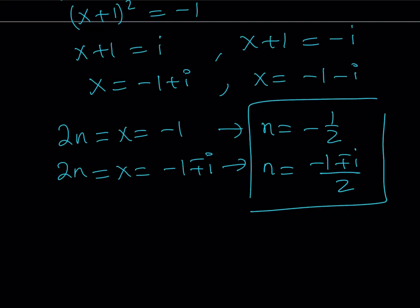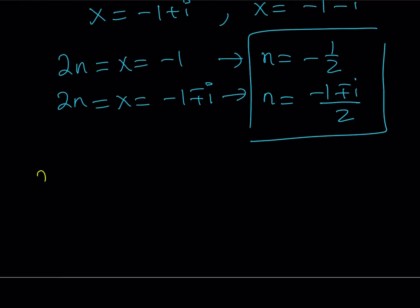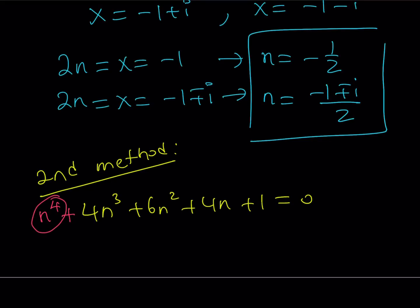Let's take a look at the second method, and I believe you're going to find it more interesting. Let me rewrite our original equation: 4n³ + 6n² + 4n + 1 = 0. I don't know if you noticed when you first saw this equation, but this kind of looks like something. Something is missing.